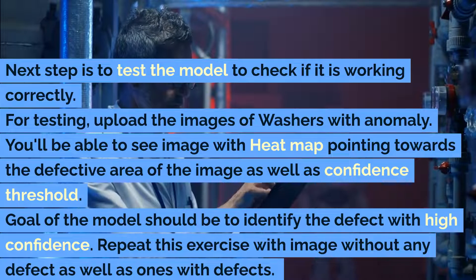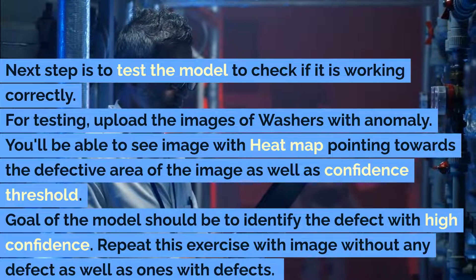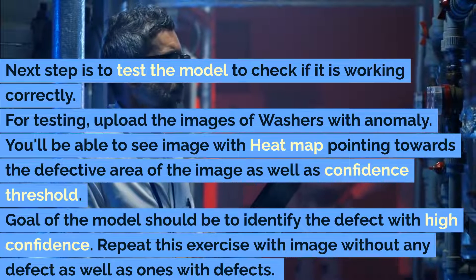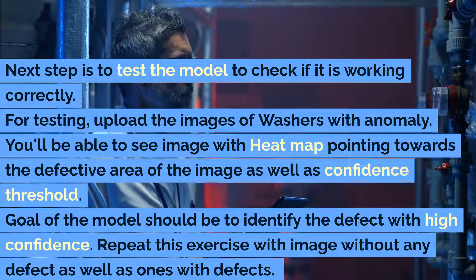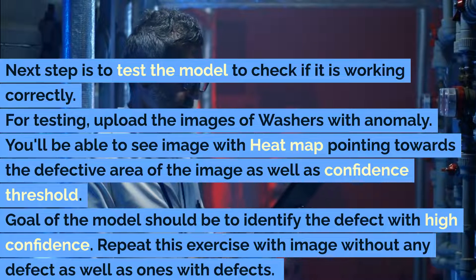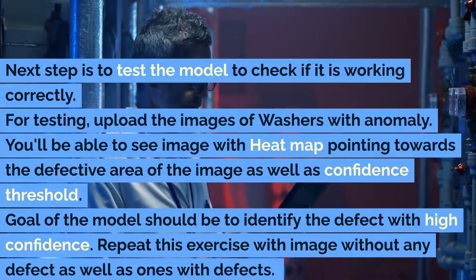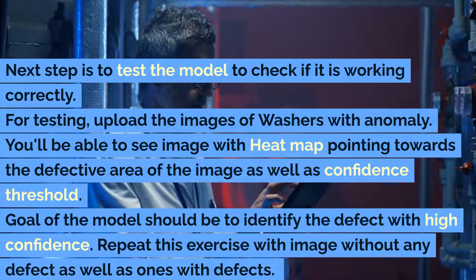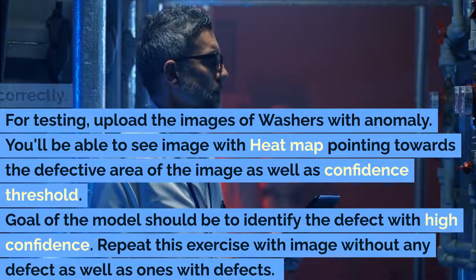The next step is to test the model to check if it is working correctly. For testing, upload images of washers with anomaly. You'll be able to see the image with a heat map pointing towards the defective area, as well as a confidence threshold. The goal of the model should be to identify the defect with high confidence. Repeat this exercise with images without any defect as well as ones with defects.